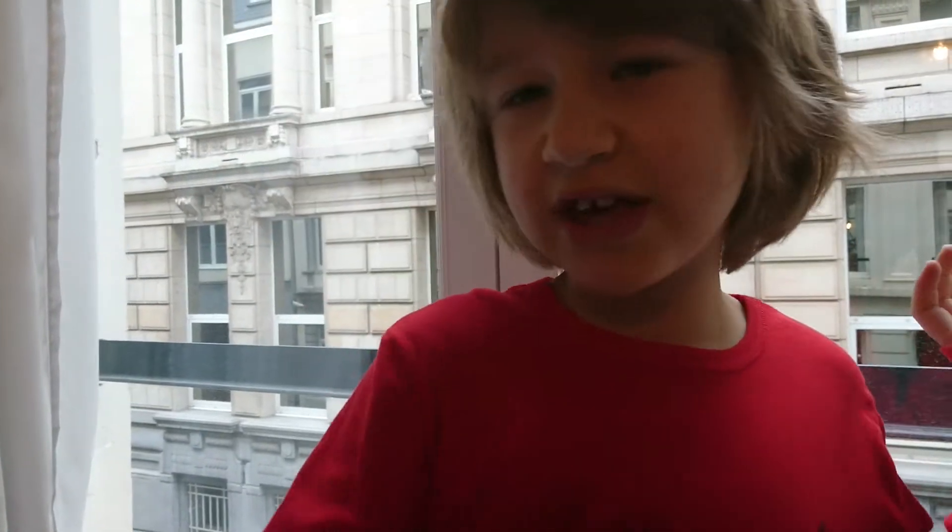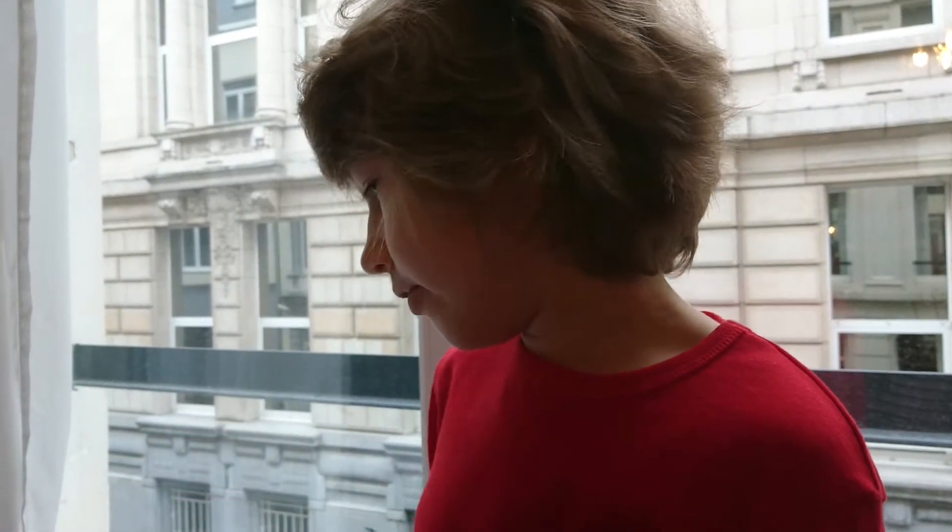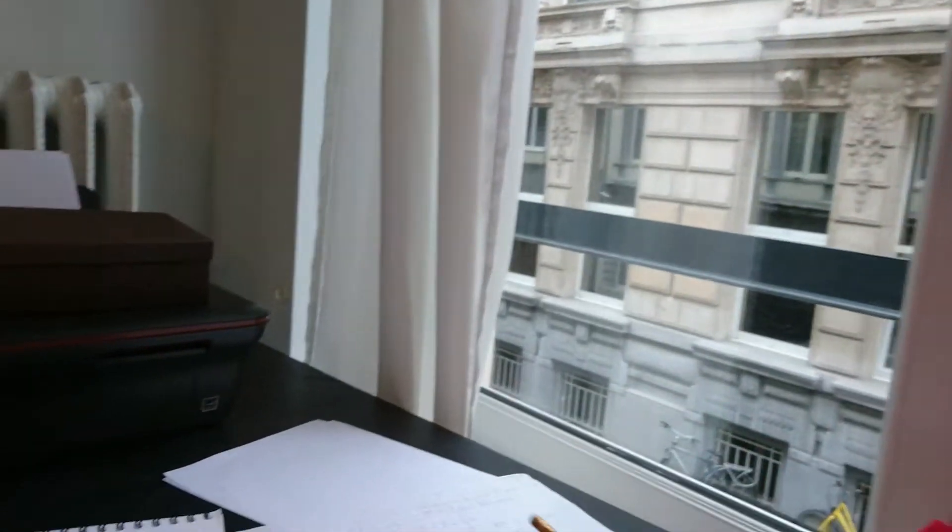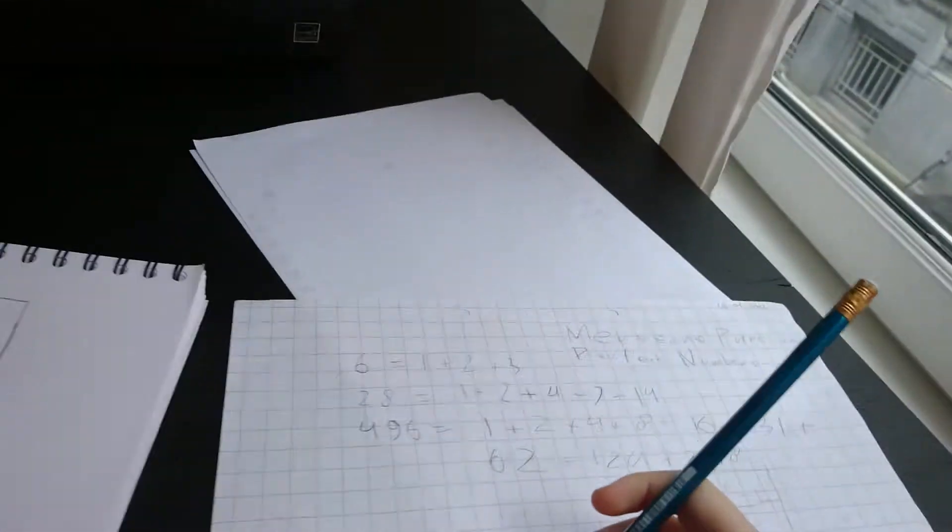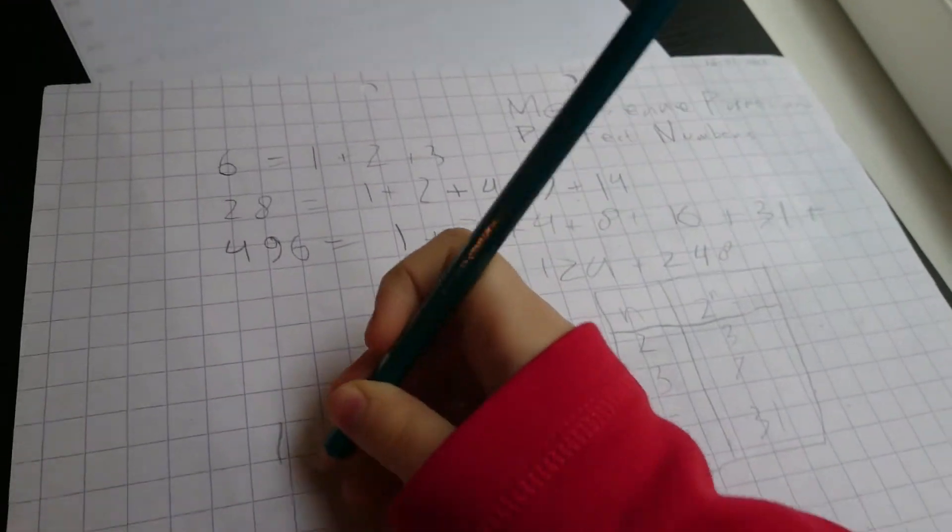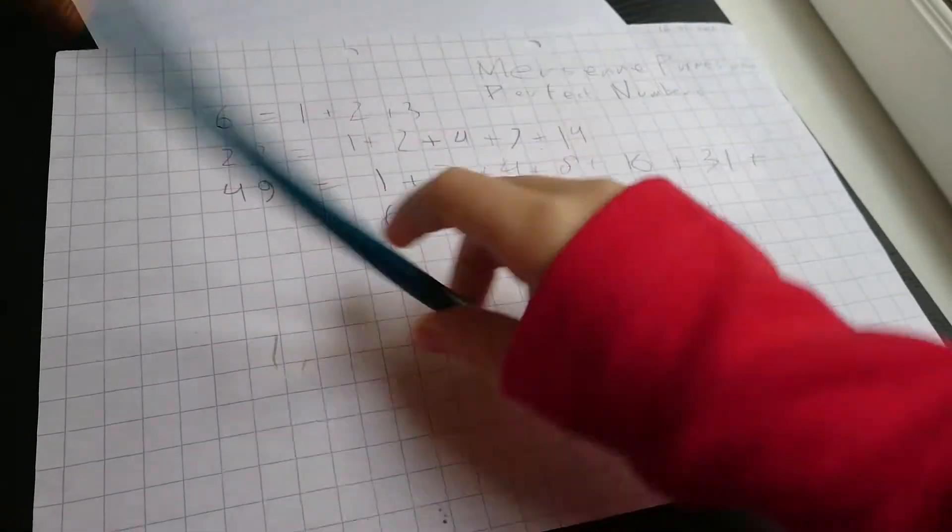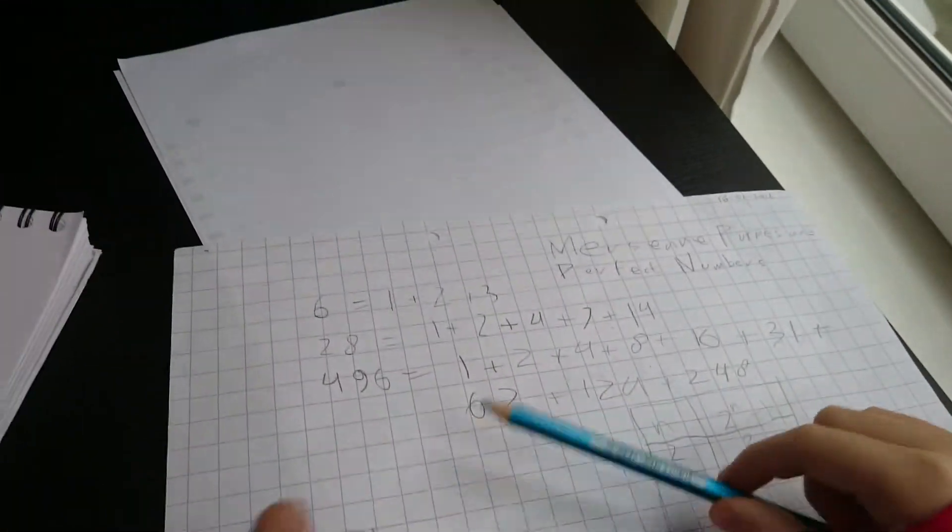How can you find the factors of a perfect number? Normally, you start at 1, and then you keep doubling. Like over here, what you showed me yesterday.